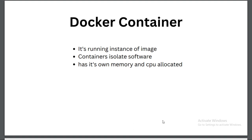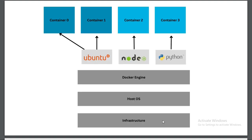Docker containers have their own allocated memory and CPU. If a container runs out of memory, it will not harm any other running containers. On a higher level, the Docker structure looks like: infrastructure, then the host machine, then the Docker engine, on top of which we fetch or create images and use those images to create containers.